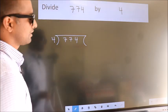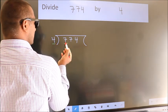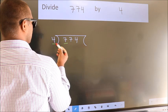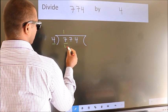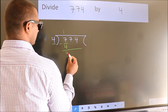Next, here we have 7, here 4. A number close to 7 in the 4 table is 4 once, which is 4. Now we subtract and get 3.